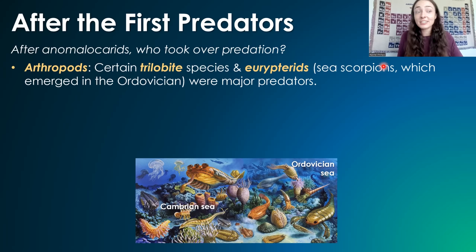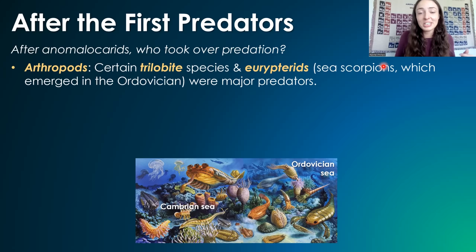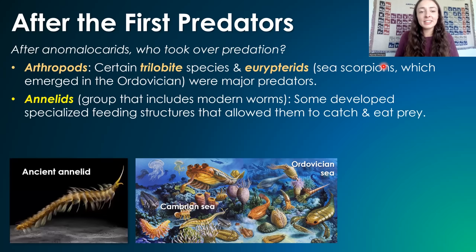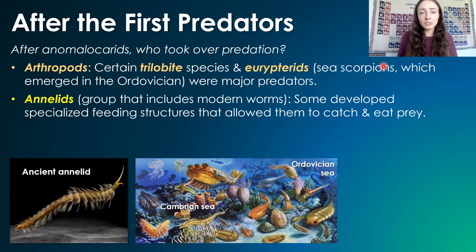There were also annelids — the group of animals that includes modern worms — that were also predators, which is pretty remarkable. They evolved specialized feeding structures around this time that allowed them to catch and eat prey. So imagine predator worms.